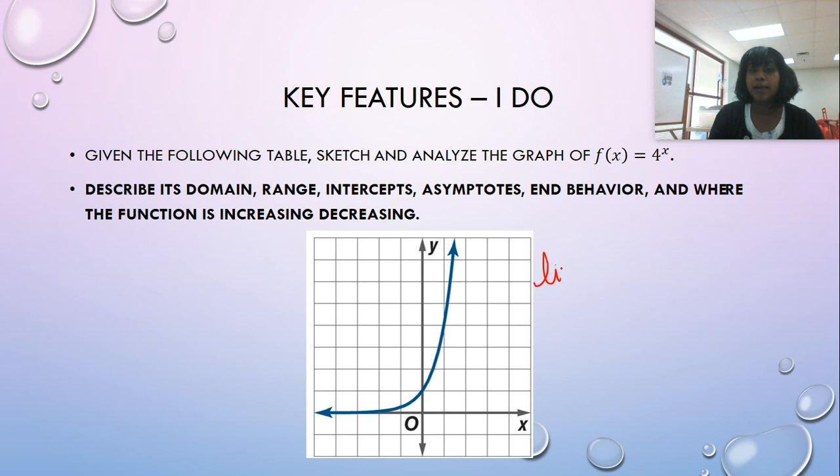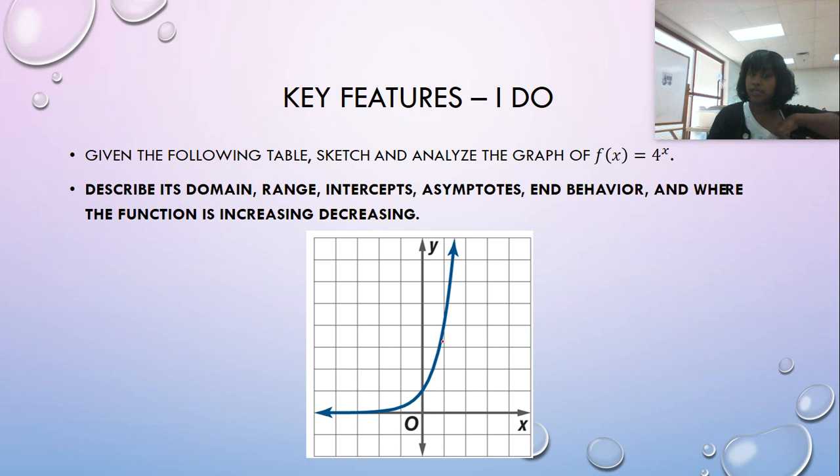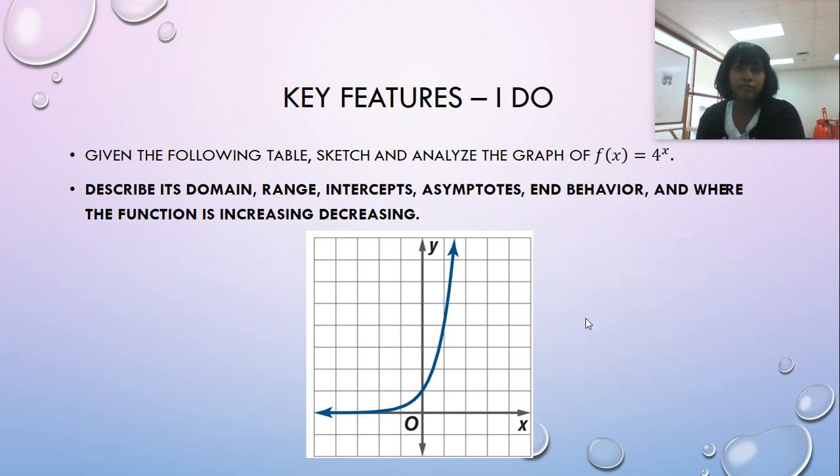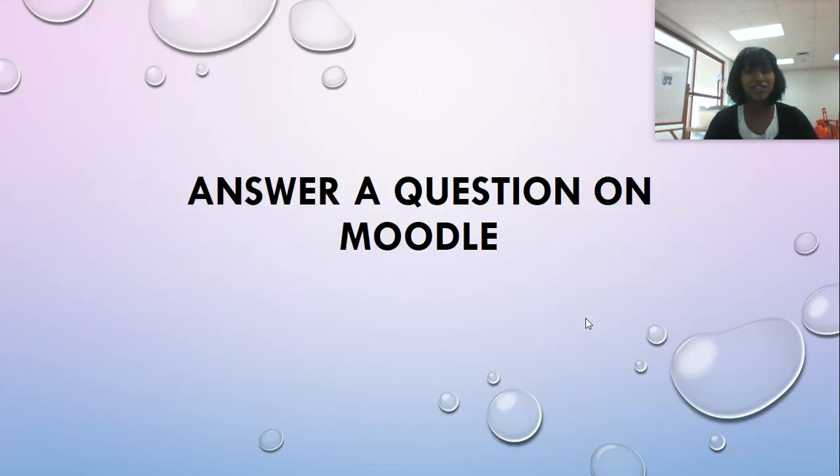And then end behavior. I could write my limit as X goes to positive infinity. What is F of X going to? And my limit as X goes to negative infinity. What is F of X going to? And that would be this side is going to zero and this side is going to positive infinity. And finally, is it increasing or decreasing? Well, it looks like it's increasing because I read my graph from left to right. So I don't need a decreasing interval. And my interval of increasing literally goes from negative infinity to positive infinity. Remember, you write your intervals in terms of your X values, not your Y. Just as a recap, here's my correct answer. Great. We got all the right answers. So guess what? It's your turn to do. You get to answer a question on Moodle.